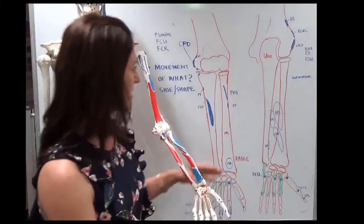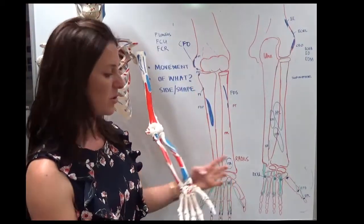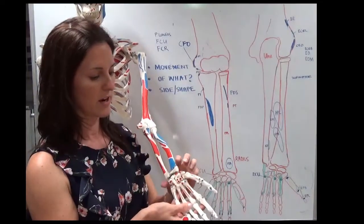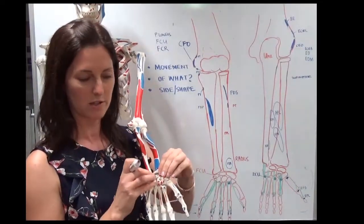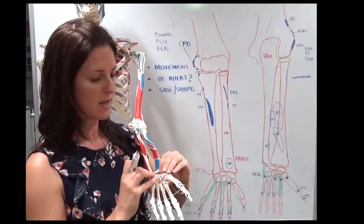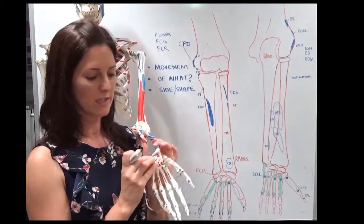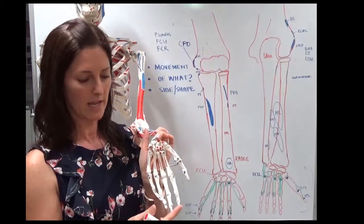So if you think about it, you're going to need structures that move the wrist, and they're going to need to finish at the wrist so that their action is on the wrist. If you're going to move the fingers, you need the tendons to extend all the way to the end of the fingers.